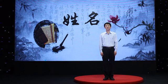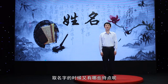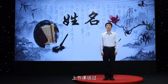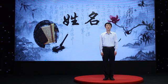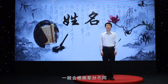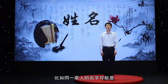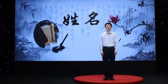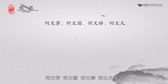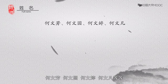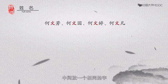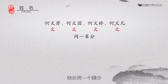刚才比较了中西不同的姓名和称呼方式。那么中西文化中取名字的时候又有哪些特点呢?上节课说过中国人的名字一般用一到两个字。如果父母有好几个孩子,一般会根据辈分不同在某一个字上体现出来。比如同一辈人的名字可能是何文芳、何文圆、何文婷、何文凡,中间放一个相同的字表示同一个辈分。